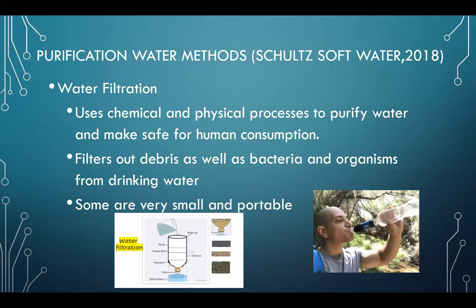Next, we have water filtration, which uses chemicals and a physical process to purify water and make it safe for human consumption. The filter removes debris, as well as bacteria and organisms from drinking water. It can be very small and portable, or very large as a full system. The video gives you an example of how water is filtered from the water source.